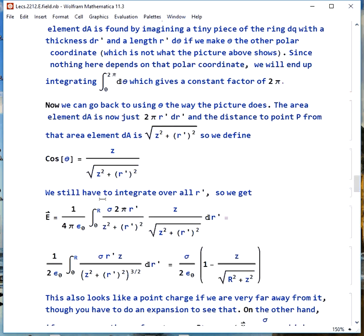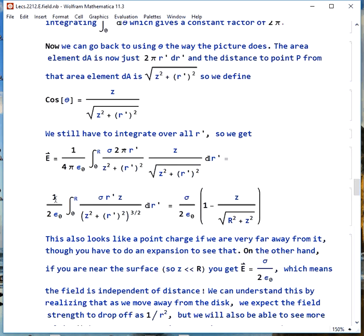We have to integrate over all r prime, so when we do that, we write this out, and it looks like a little bit of a mess, and it is, but we can simplify it to sigma over 2 epsilon naught multiplied by 1 minus z over square root of r squared plus z squared.